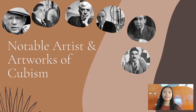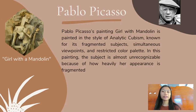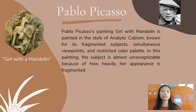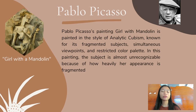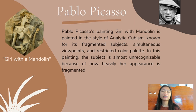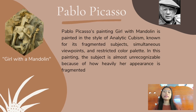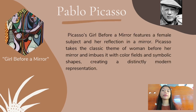Pablo Picasso is the most dominant and influential artist of the first half of the 20th century. His Cubist artwork entitled 'Girl with a Mandolin' was painted in the style of Analytic Cubism, known for its fragmented subjects, simultaneous viewpoints, and restricted color palettes. The symbolic representation of a mandolin carries many metaphors associated with creation, including the ability to produce music and its shape having echoes of a woman's form.